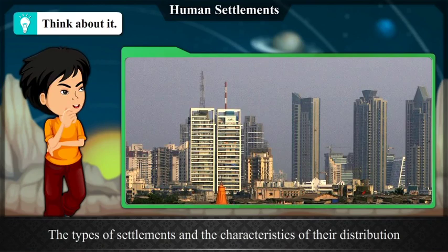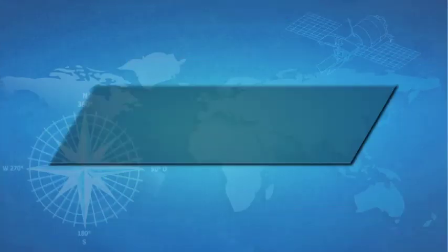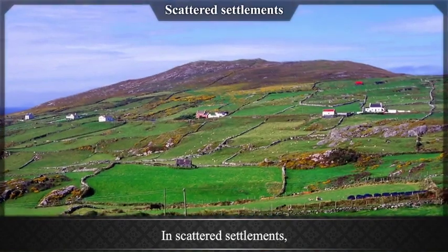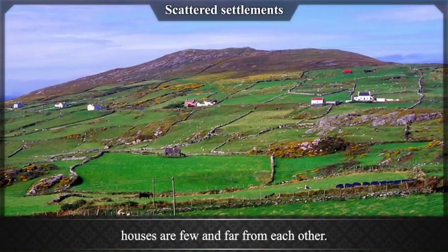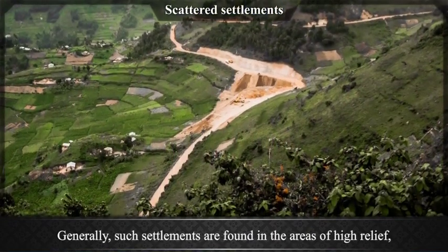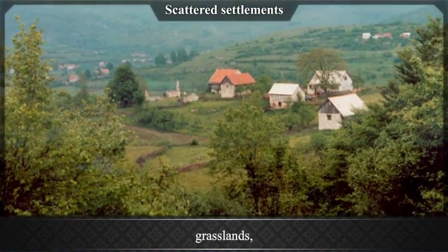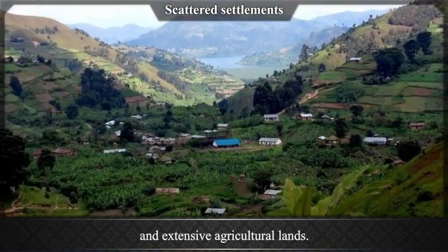The types of settlements and the characteristics of their distribution can be described as follows. Scattered settlements: In scattered settlements, houses are few and far from each other. Generally such settlements are found in areas of high relief, dense forests, grasslands, hot deserts, and extensive agricultural lands.